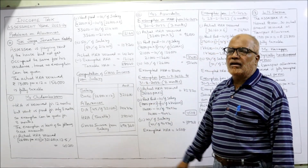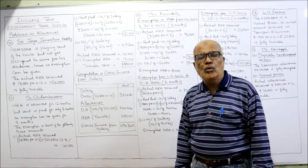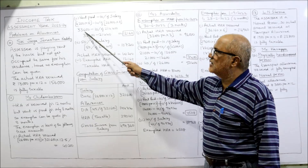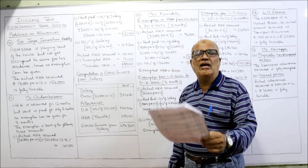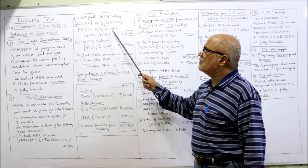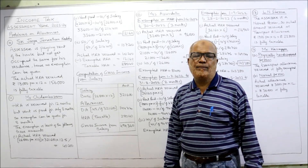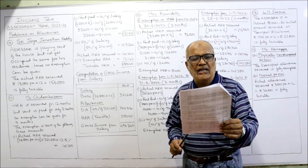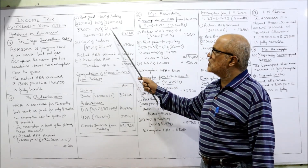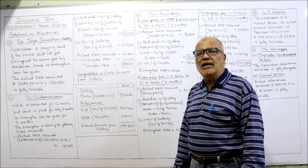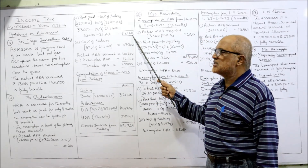Second: rent paid minus 10% of salary. Rent is ₹4,200 per month, but paid only for eight months, so ₹4,200 × 8 = ₹33,600. 10% of basic: ₹26,800 × 8 = ₹2,14,400 × 10% = ₹21,440. So ₹33,600 − ₹21,440 = ₹12,160. Third: 50% of salary because the assessee is living in Delhi, one of the four metropolitan cities. 50% of ₹2,14,400 = ₹1,07,200. Least of the three — ₹40,200, ₹12,160, or ₹1,07,200 — is ₹12,160. This is the exempted HRA.